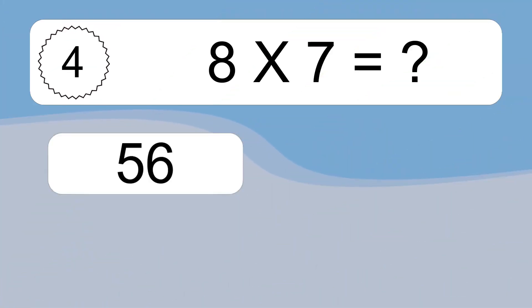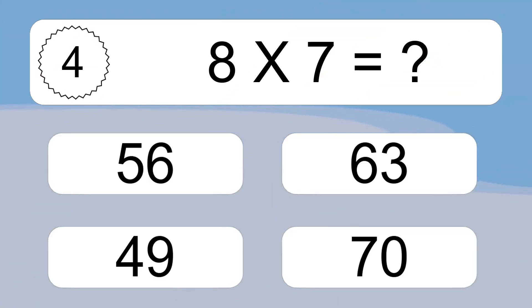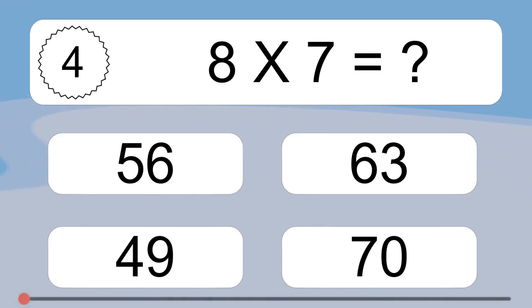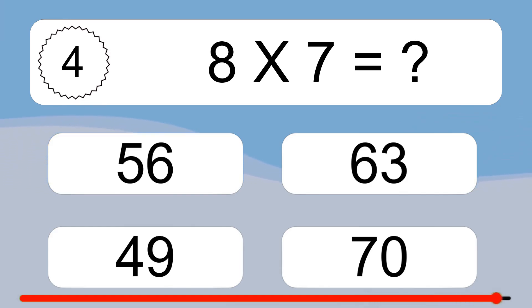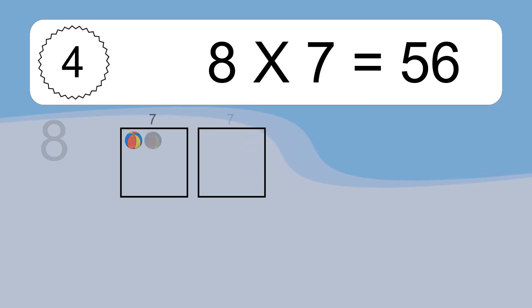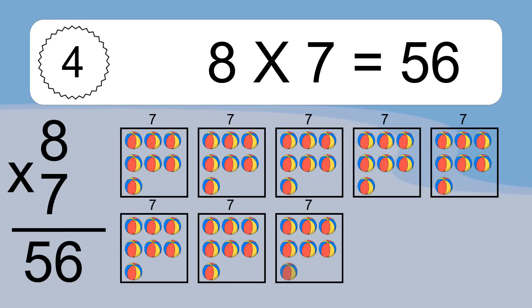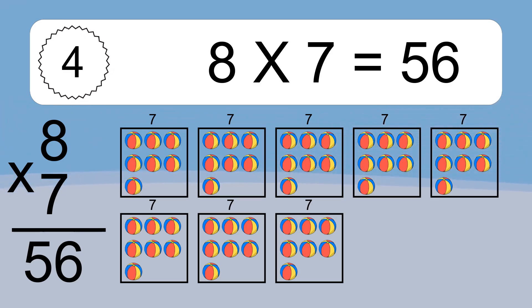8 times 7 equals what? We have 8 boxes, and each box has 7 colorful balls inside. If you count all the balls in all the boxes together, you will have 8 times 7 balls. This equals 56 balls.